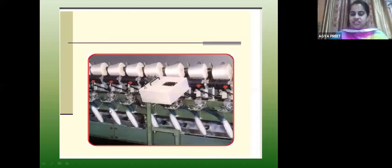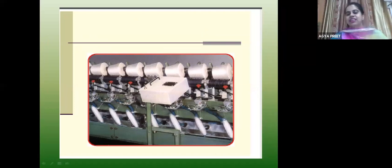Look at these ring frame packages — look at how small they are. In the winding machine, these small packages are converted into a larger package formation called a cheese. So cheese is made on the winding machine. Winding takes a smaller package, makes a bigger package, and removes yarn faults. That is the winding process.